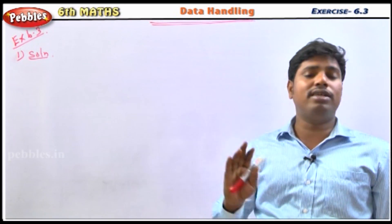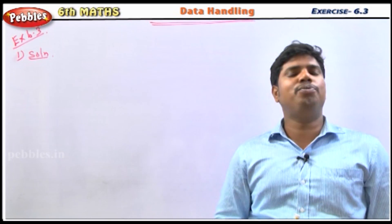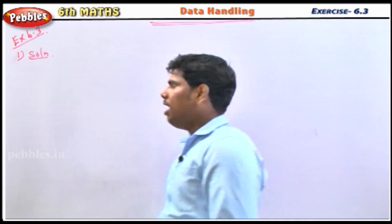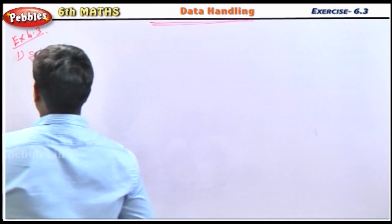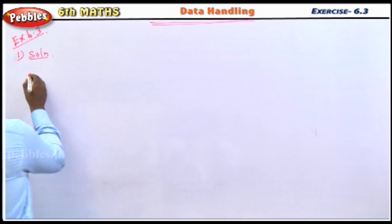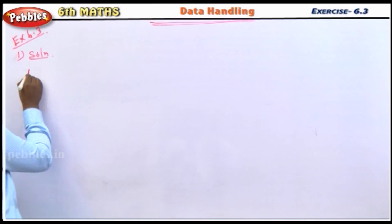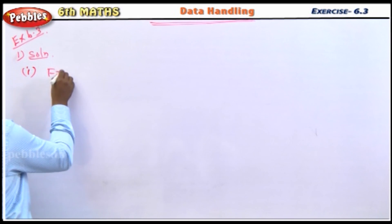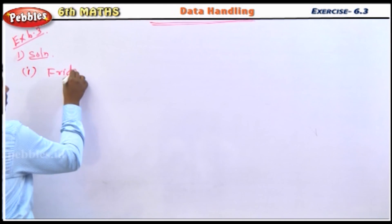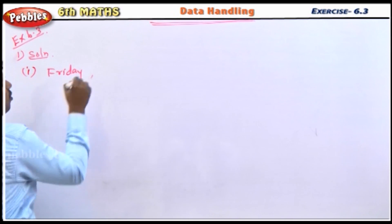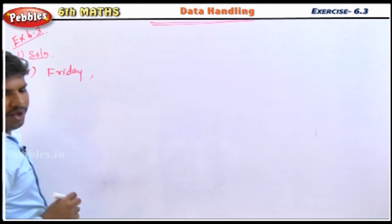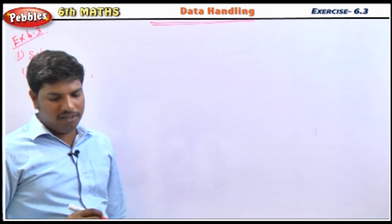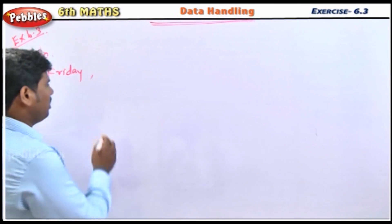How many shirts were produced on Friday? 40 shirts were produced on Friday. So the answer to the first question is Friday, with 40 shirts.